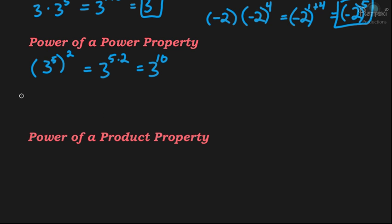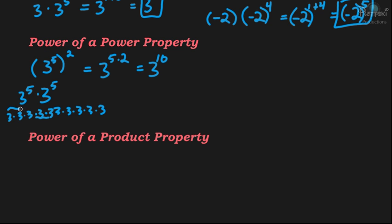To verify: if we expand, we have 3 to the 5th power times itself (since it's squared), giving us 3 to the 5th times 3 to the 5th. Expanding each gives five 3s plus another five 3s, for a total of ten 3s — confirming 3 to the 10th power. The shortcut is simply to multiply the exponents: 3 to the 5th squared equals 3 to the 10th.